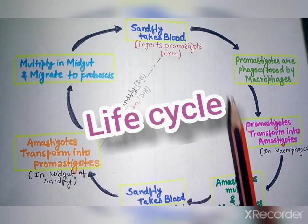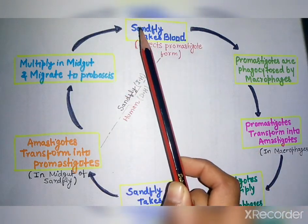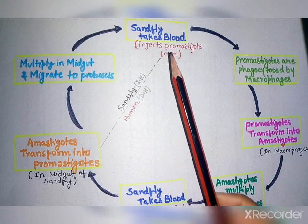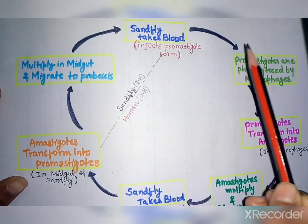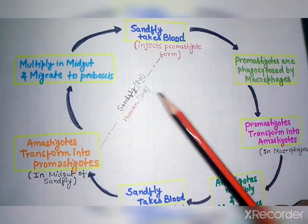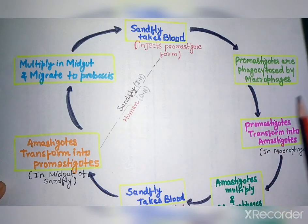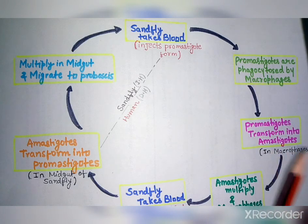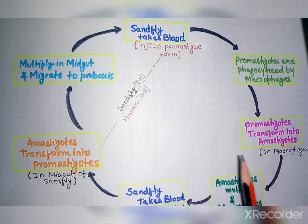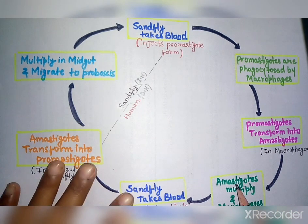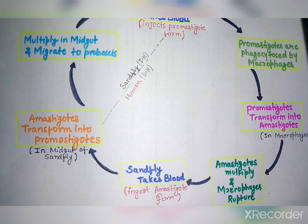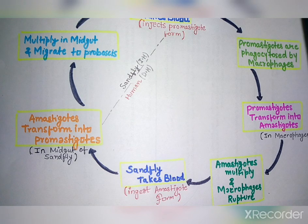The sandfly and human are the two hosts in Leishmania Donovani's life cycle. First, the sandfly takes a blood meal and injects the promastigote form into the human. The promastigote enters as a foreign body and is phagocytosed by macrophages. Inside the macrophages, the promastigote is converted into the amastigote form, which then multiplies. The multiplying amastigotes rupture the macrophages and are distributed throughout the body and into the bloodstream.